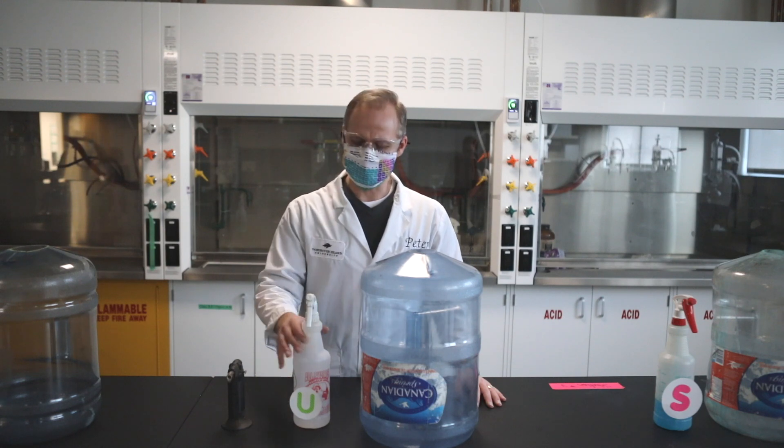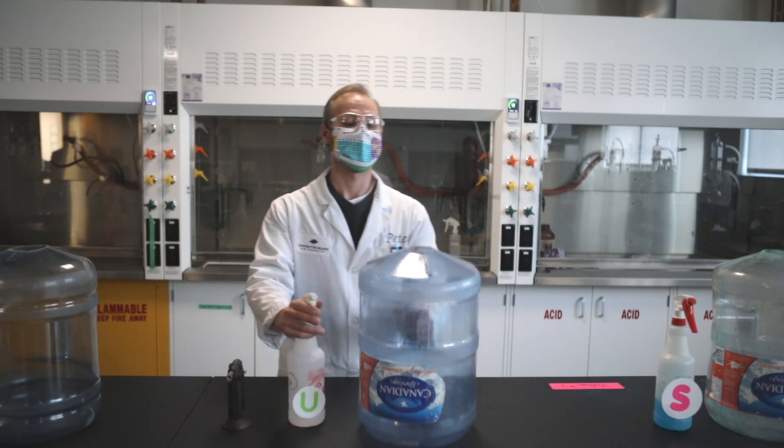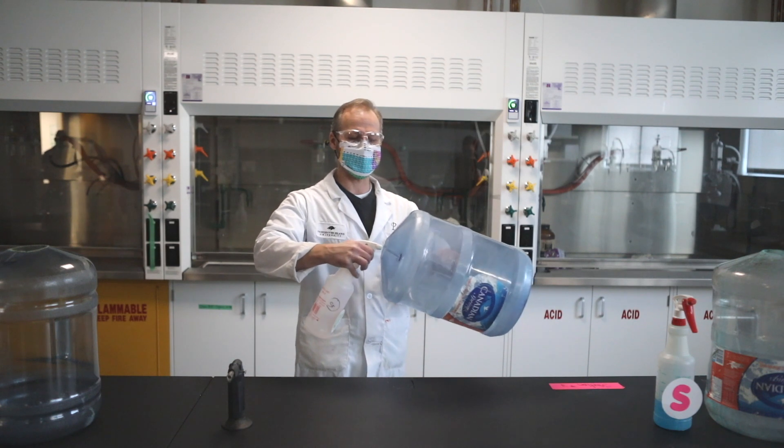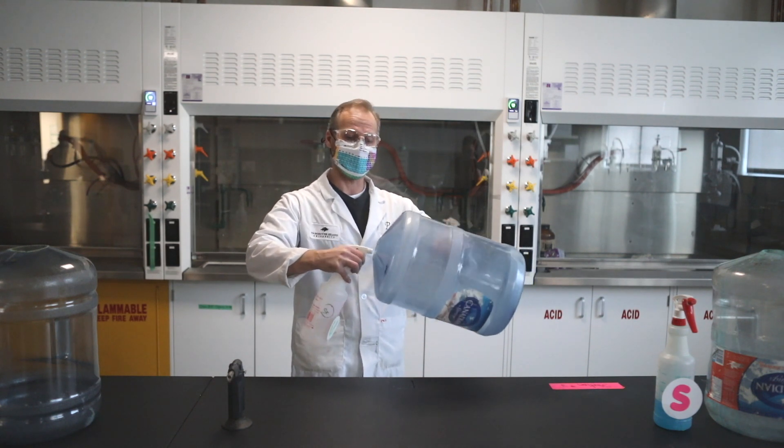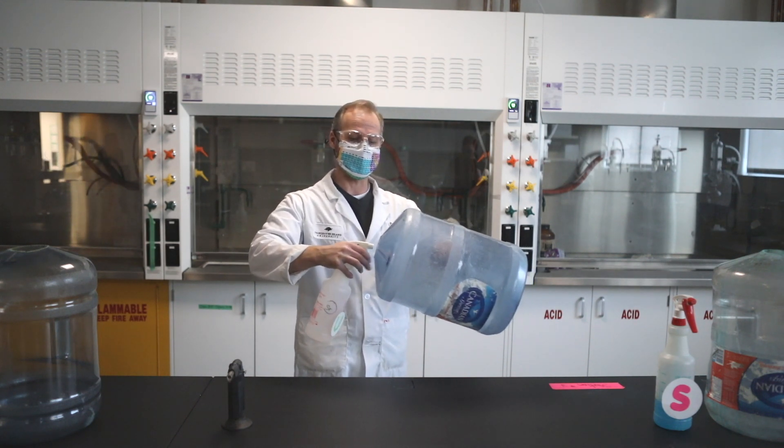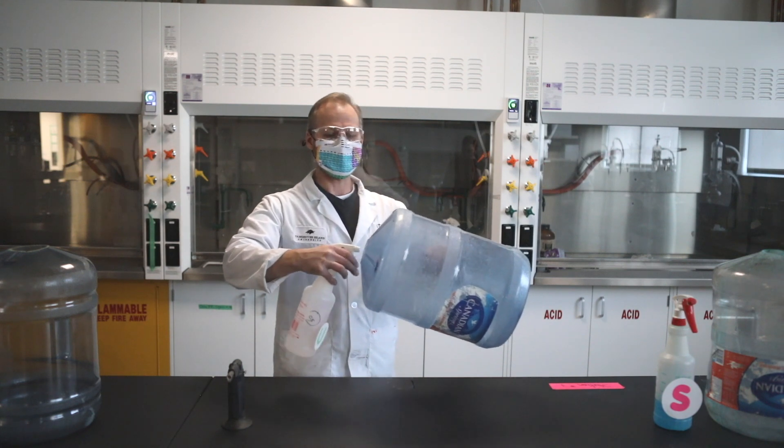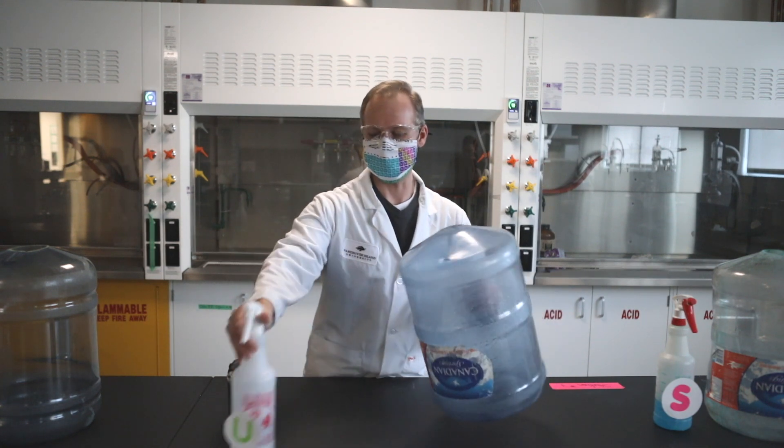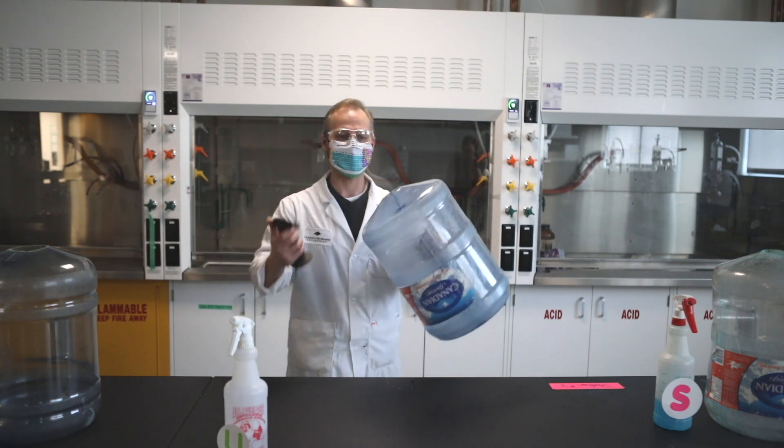Alright, so for the next one, we've got this colorless solution, but it's strontium. So we're going to put some strontium inside this jug, again using the ethanol as a way to sort of deliver it and to ignite it. And we're going to see what color it gives when it burns. That should be enough. Alright, let's see what happens.